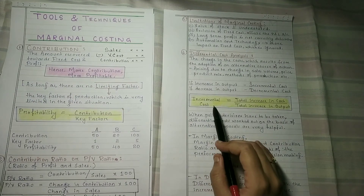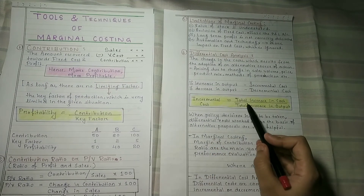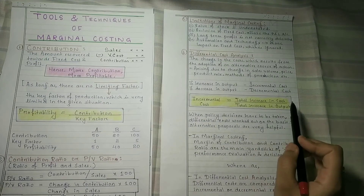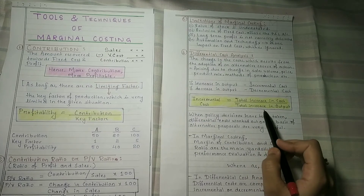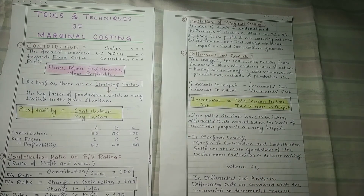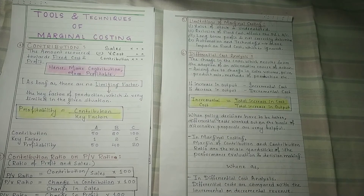We use differential cost analysis when making policy decisions. When there are many proposals, we compare the differential cost of each against the current situation and choose the proposal with the lower differential cost to aid our decision.